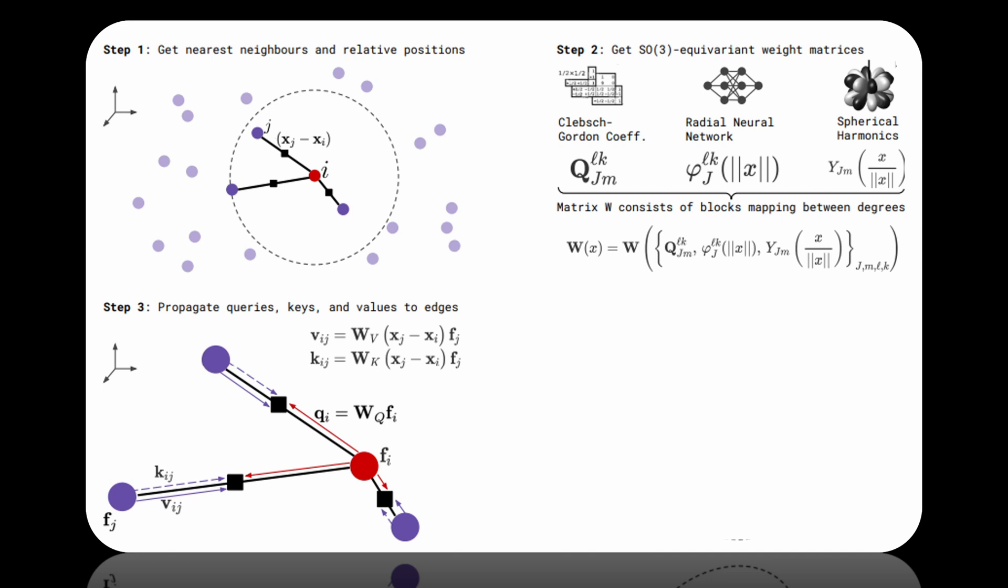For keys, queries and values we have a separate weight matrix that transforms the features in an equivariant manner. Additionally, the nearest neighbor graph is used to select points that are used for the attention mechanism. Finally, the attention scores are calculated as usual, namely as a dot product of queries, keys and normalized using the softmax function. So, the overall trick here is really to replace all weight matrices with equivariant kernels that were presented in tensor field networks. As a result, the whole attention mechanism is 3D rotation and translation equivariant.